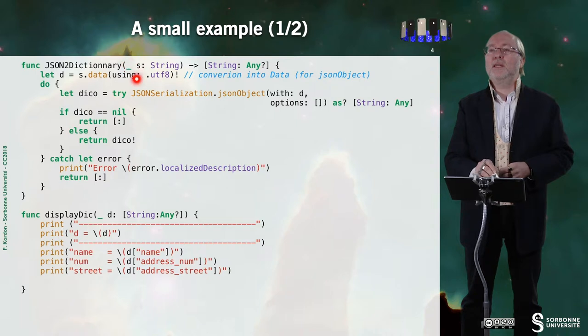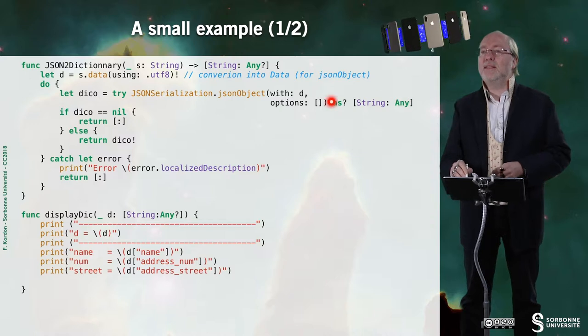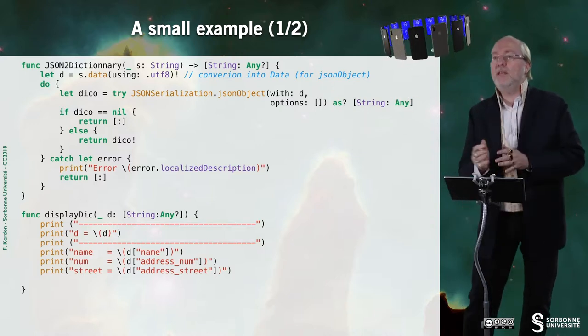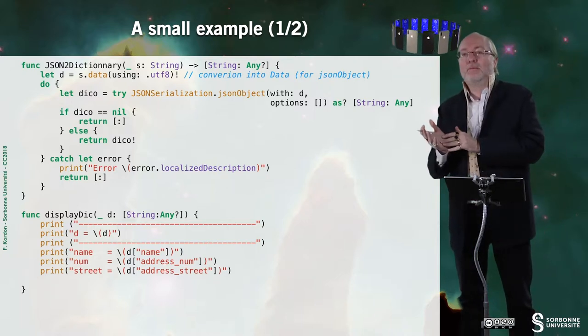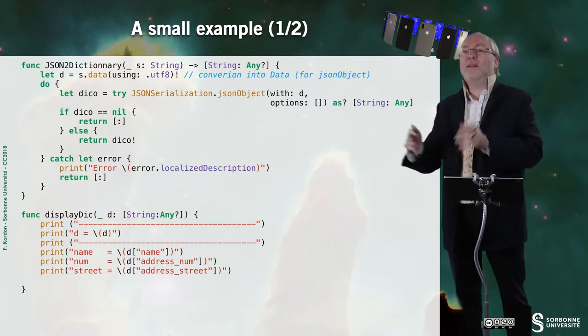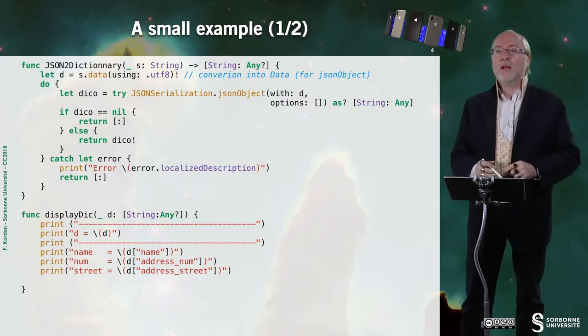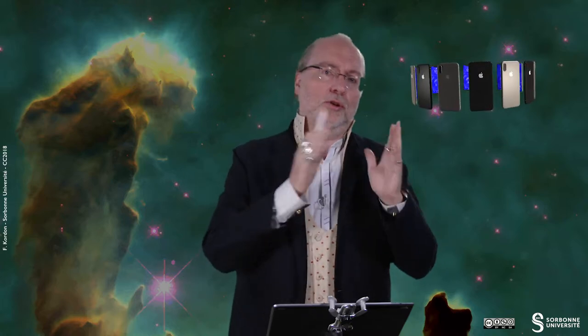I have converted my string here into data. And I state that since I get this Any question mark, I want this Any to be a dictionary of String and anything. So the key is a String, but the value is what you can do. And of course, in this situation, for a given key, I know what type of value I can have. If I'm pretty sure that everything in my JSON fragment is a String-String pair, then I can restrict to String-String.